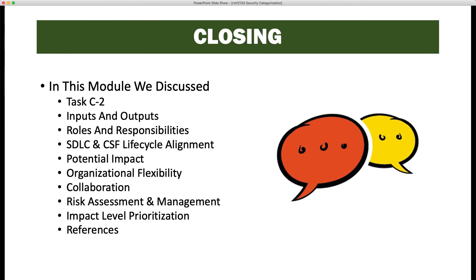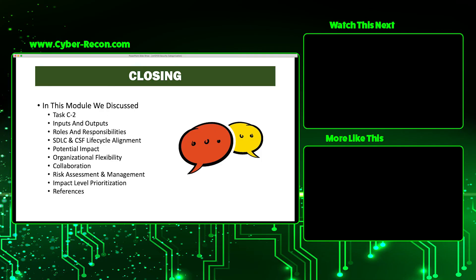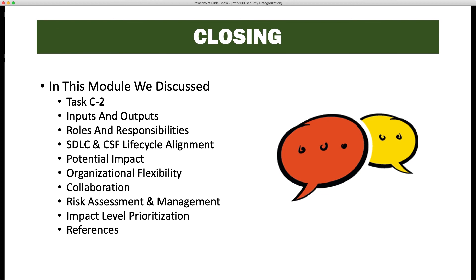In this module, we discussed Task C2 inputs and outputs, roles and responsibilities, SDLC and Cybersecurity Framework alignment, potential impact, organizational flexibility, collaboration, risk assessment and management, impact level prioritization, and references. In the lab, we'll go into another video where we talk about actually categorizing information types and the information system, and there's a handout where you'll categorize information types and an information system yourself.